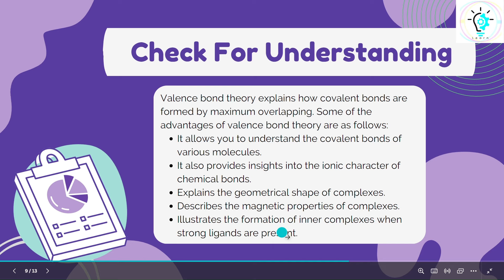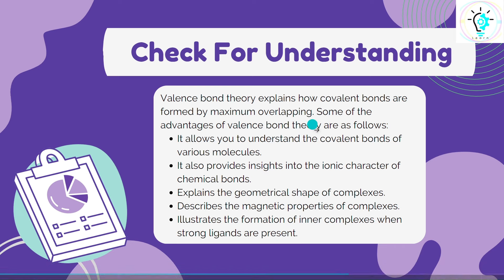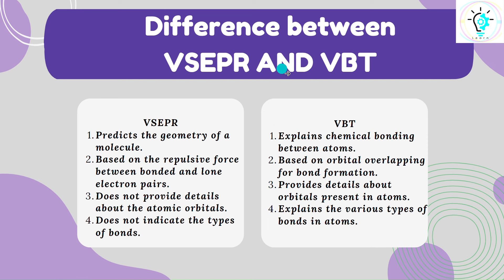When you study valence bond theory at the degree or master's degree level, you will properly understand all these concepts. But for now, you must remember that valence bond theory explains how covalent bonds are formed by maximum overlapping. Finally, the difference between VSEPR and VBT: VSEPR predicts the geometry of the molecule, whereas VBT explains the chemical bonding between atoms formed due to hybridization.